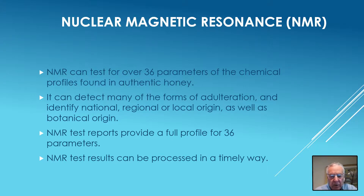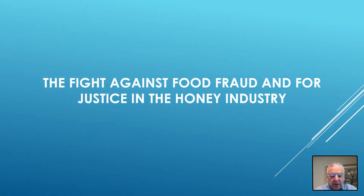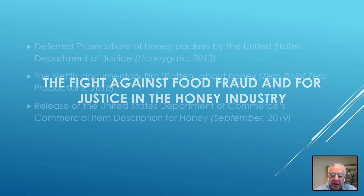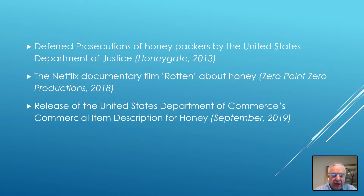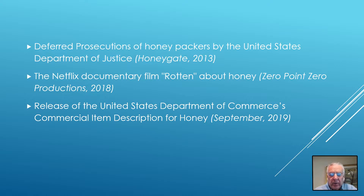The struggle against food fraud and for justice in the honey industry has led to a wide range of countermeasures. These include deferred prosecution for honey circumvention involving 30 countries, where honey was being circumvented to avoid anti-dumping duties and was also adulterated using modes of production inconsistent with the authenticity of honey.